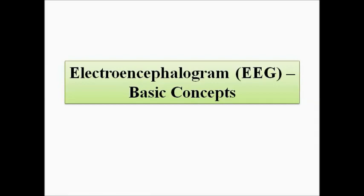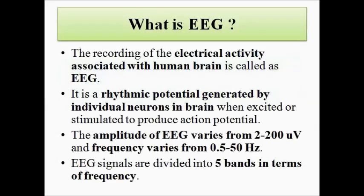So what is EEG or electroencephalogram? It is the recording of the electrical activity associated with the human brain. The cells in the brain, which are called neurons, there are thousands of neurons which join together to form the structure of the brain, and each individual neuron generates a rhythmic electric potential because of the migration of charges — the redistribution of opposite charges in different ways.